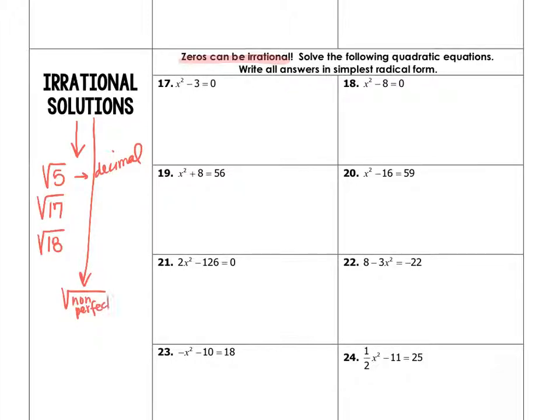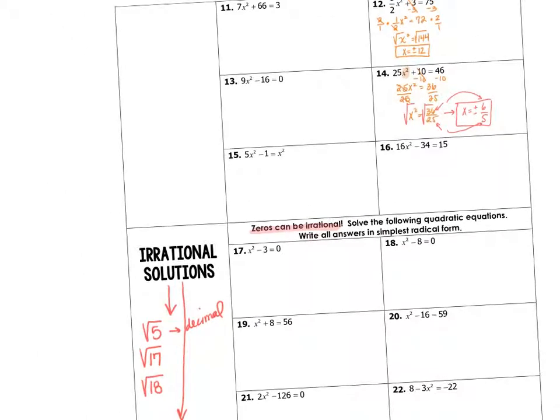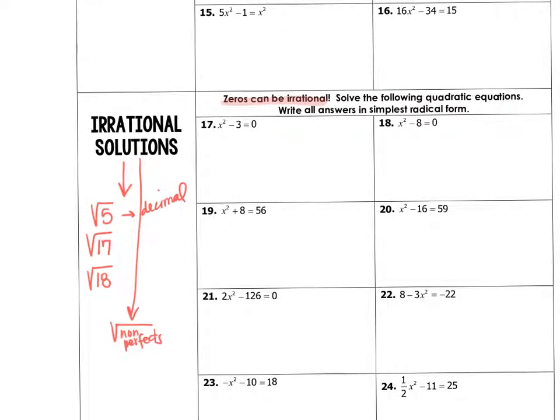For example, when we got the square root of 144 up here, we were able to say plus or minus 12. Or when we got the square root of 36/25, we were able to say plus or minus 6/5. But sometimes you're going to have non-perfect numbers inside the square root.